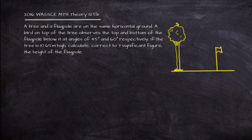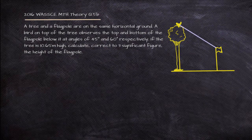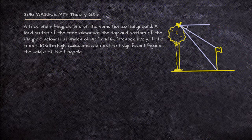There is a bird on top of the tree, looking down at the top and the base of the flagpole. We are given those angles of depression: the top of the flagpole will be the lesser angle, 45 degrees, and the base of the flagpole will be the larger angle, 60 degrees.